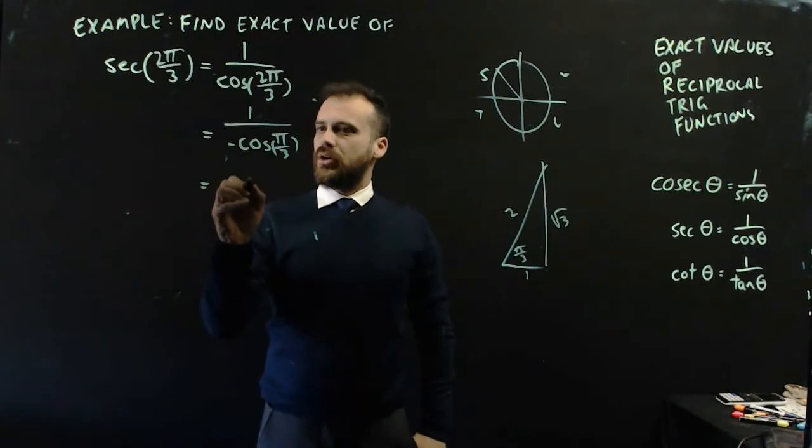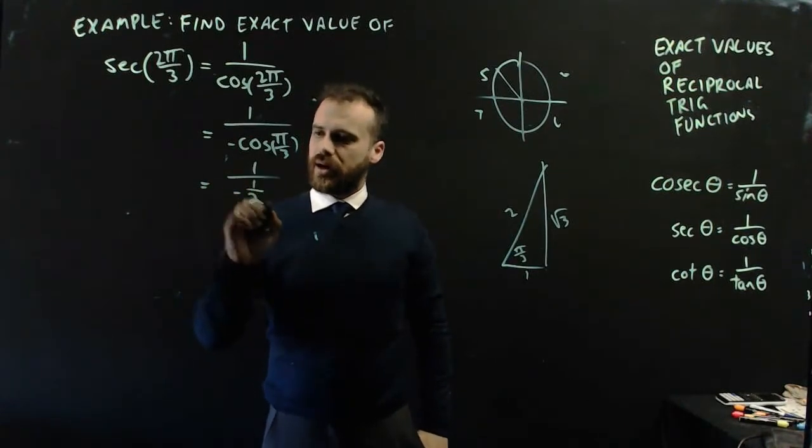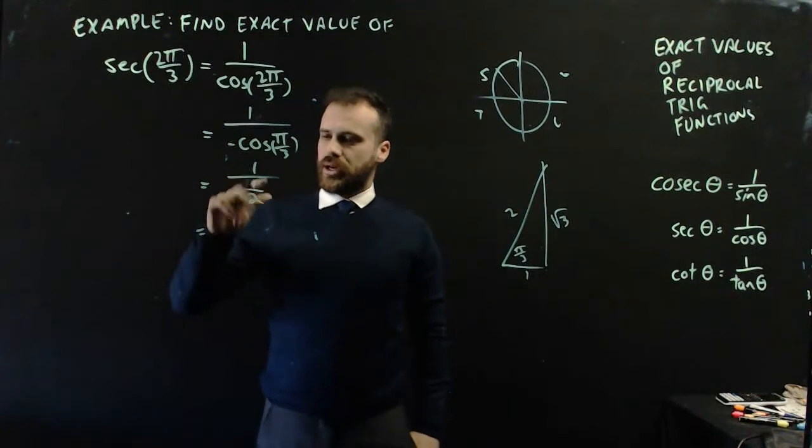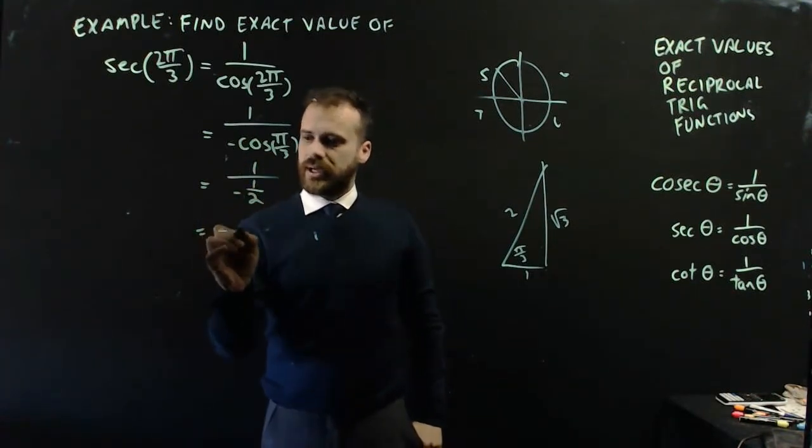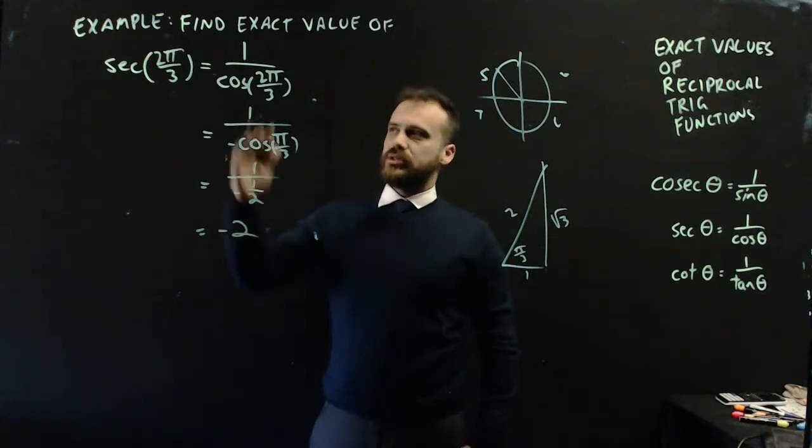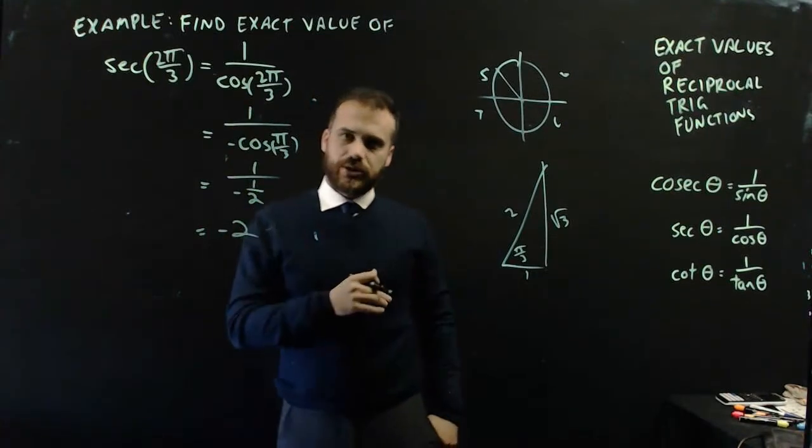So, now I get 1 over negative 1/2. 1 divided by 1/2 is 2, negative. My answer is negative 2. So, sec 2π/3 is equal to negative 2.